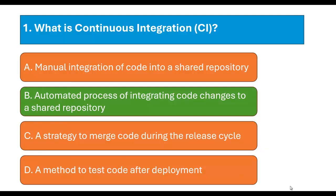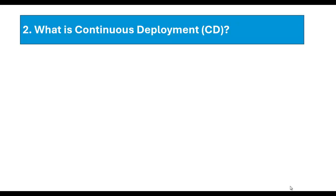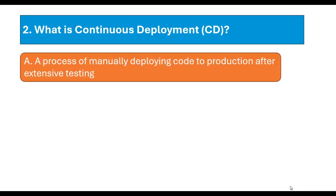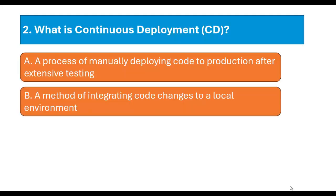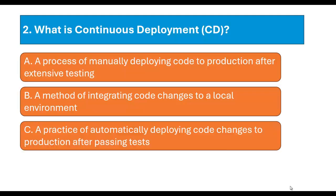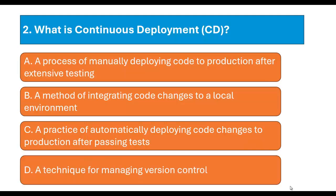Now let's move to question number 2: What is continuous deployment? Option A: A process of manually deploying code to production after extensive testing. Option B: A method of integrating code changes to a local environment. Option C: A practice of automatically deploying code changes to production after passing tests. And Option D: A technique for managing version control. Please pause the video and try to answer the question.